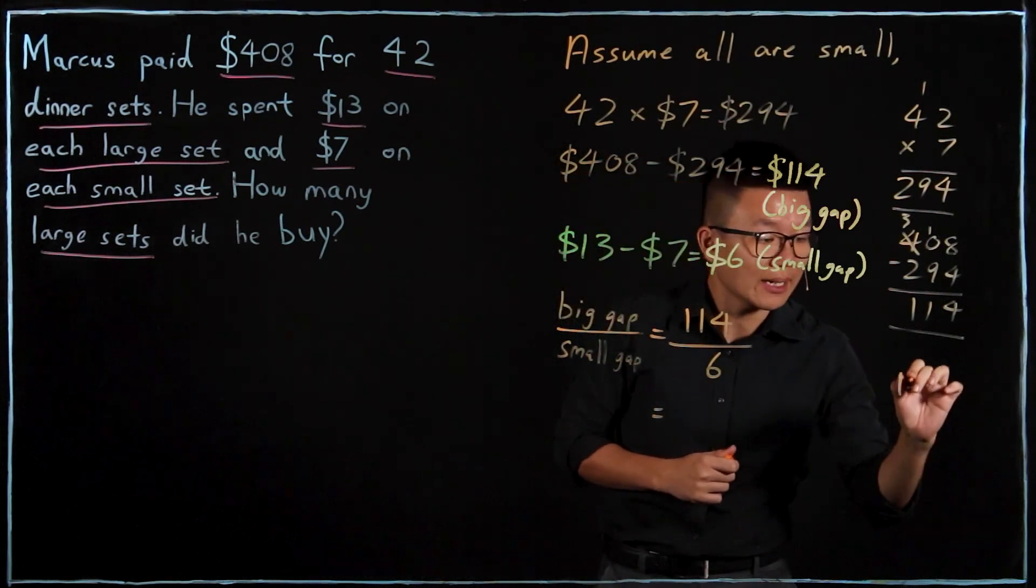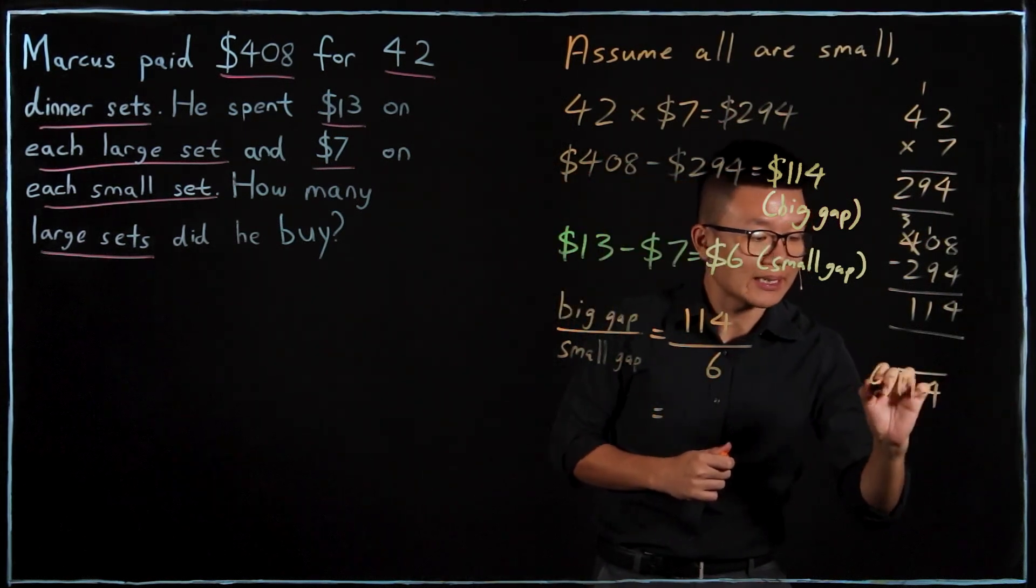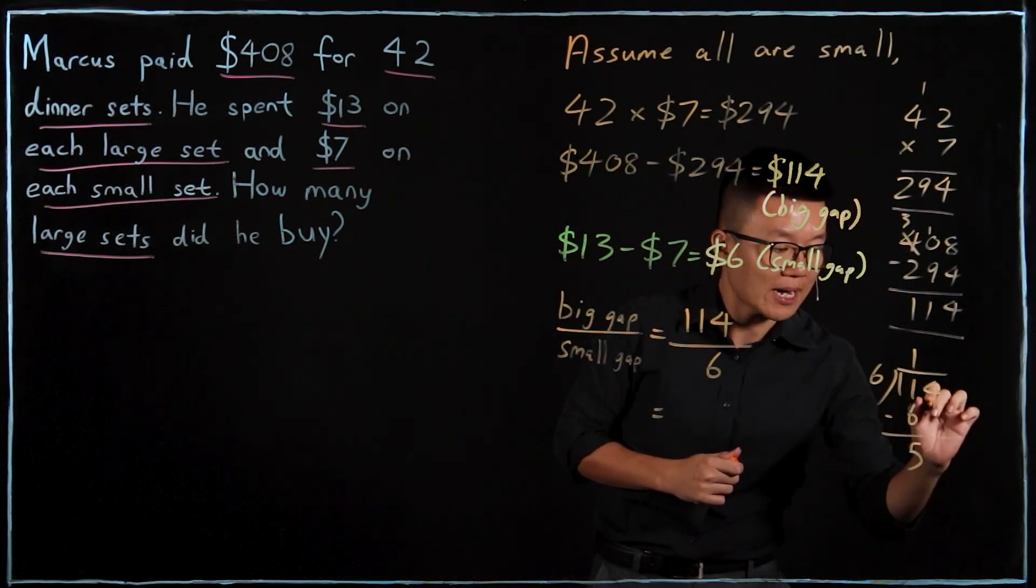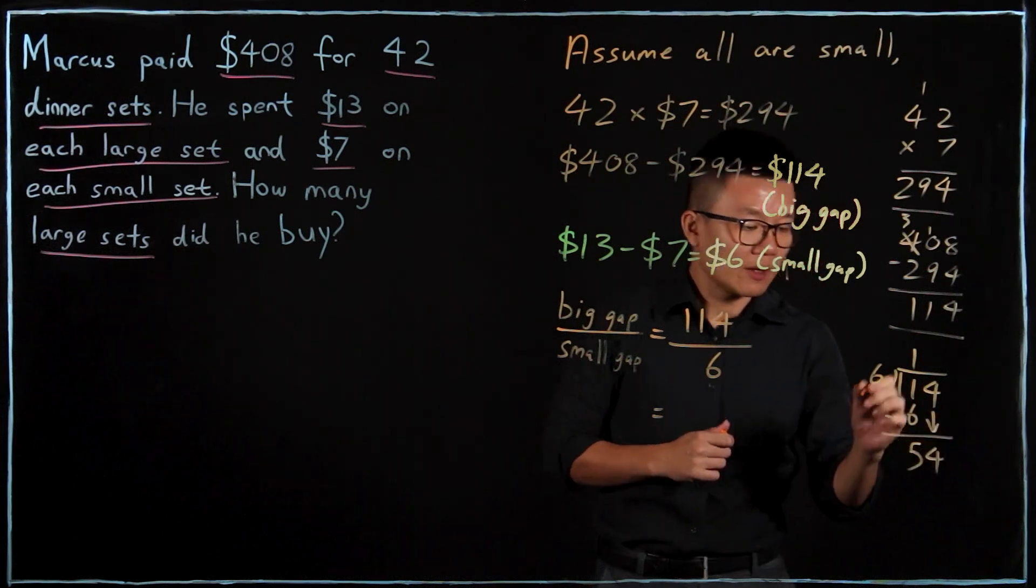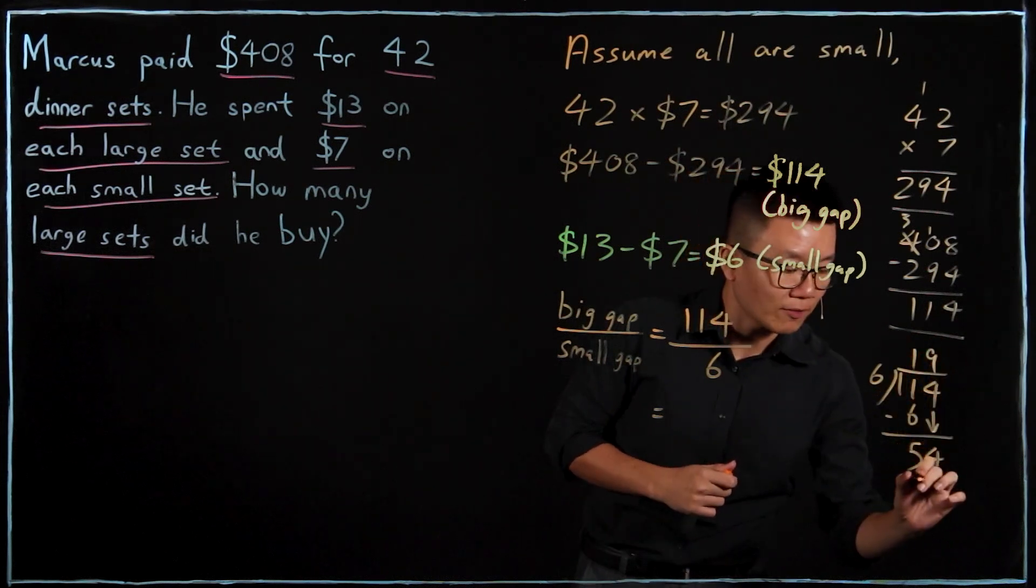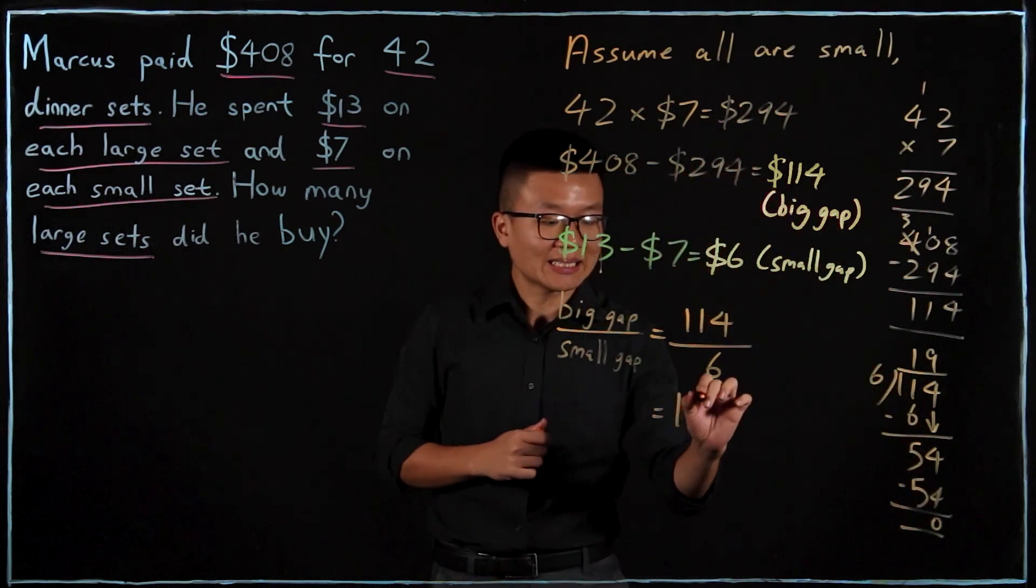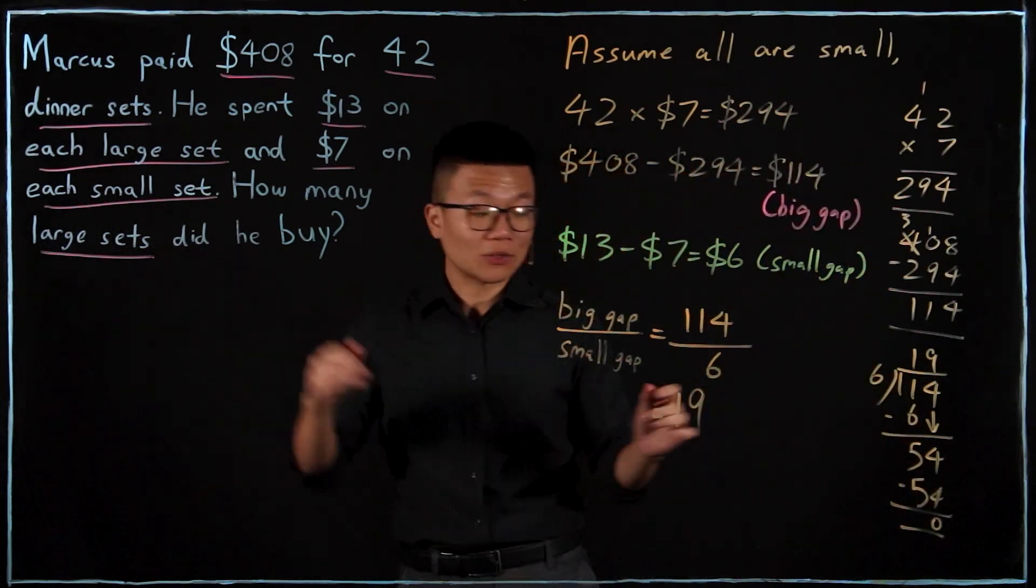I'll do it by the side: 114 divided by 6. 6 times 1 is 6. Regroup. 5. I pull down the 4. 54 divided by 6 is 9. So I'll have 19 sets, and these 19 sets belong to the large.